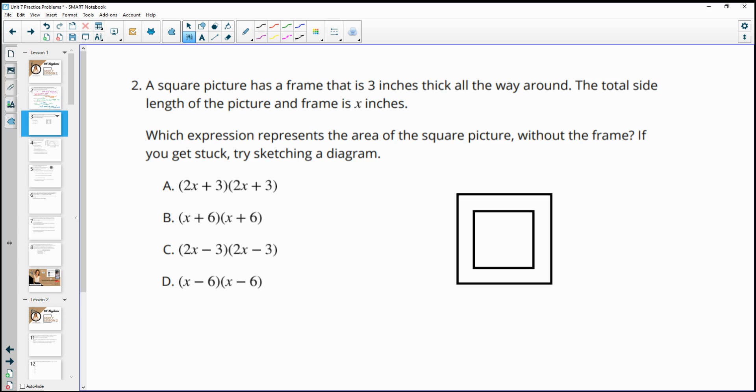Number two, a square picture has a frame that's three inches thick all the way around it. The total side length of the picture and the frame is X inches. Which expression represents the area of the square picture frame? So we know that this length right here is X, and so is the other one, since it's a square. And then we know this thickness is 3. So if we're looking for the length of the little square in here, without the border,